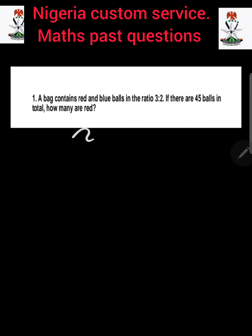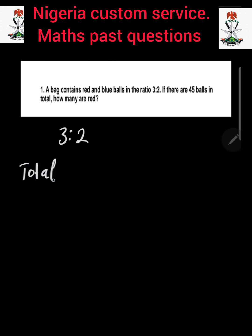To answer this question correctly, the first thing we need to do is to understand the concept of ratio. We are given the ratio 3:2, which means for every 3 red balls, there are 2 blue balls. So the first thing we need to do is to get our total ratio, which is the sum of the given ratio.